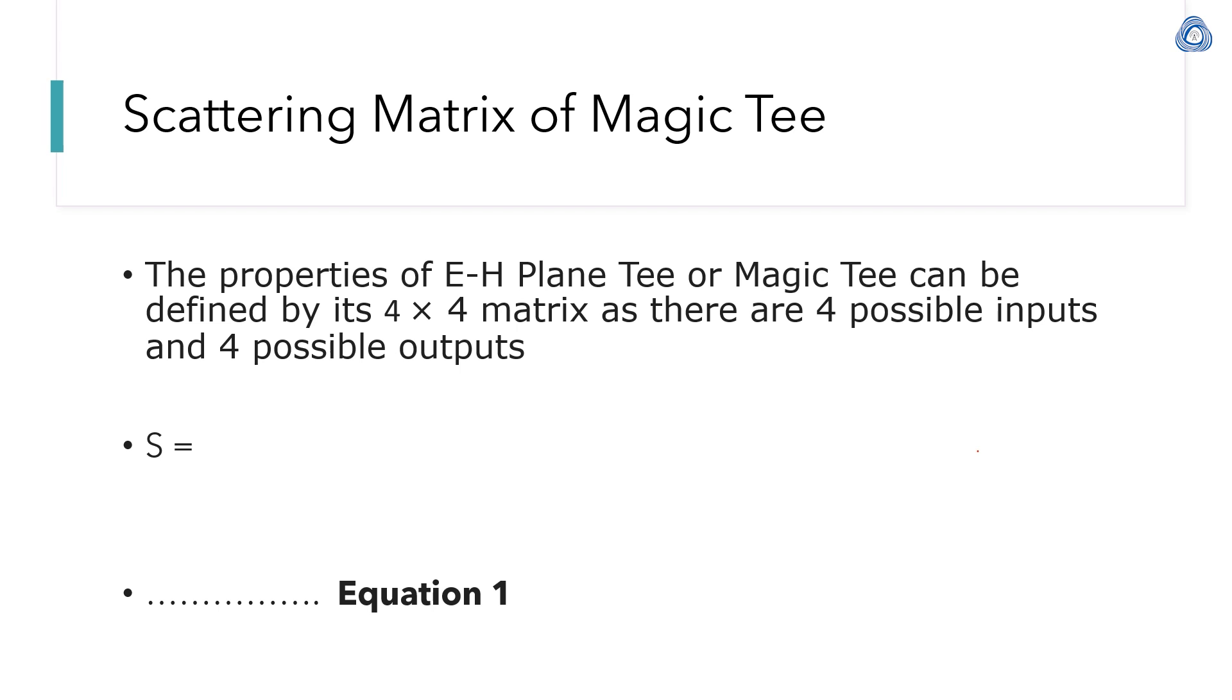Now we are interested to find the scattering matrix of magic T. For magic T we have 4 inputs and 4 possible outputs. The magic T scattering matrix is a 4x4 matrix with elements S11 through S44, representing all possible input-output combinations.